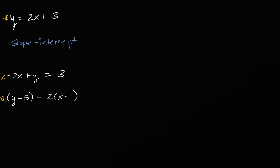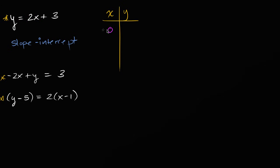Hopefully in a few minutes it will be obvious why it is called slope-intercept form. Before I explain that, let's just try to graph this thing by plotting some points. So x comma y — I'm going to pick some x values where it's easy to calculate the y values. The easiest is if x is equal to zero. If x is equal to zero, then two times zero is zero, that term goes away, and you're only left with y is equal to three.